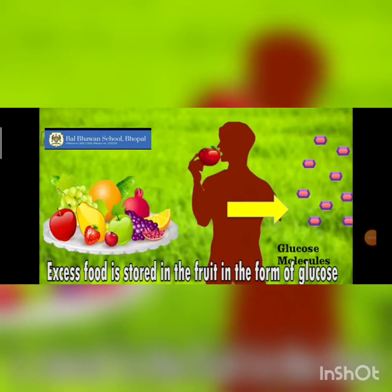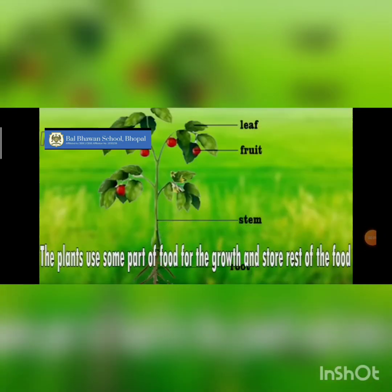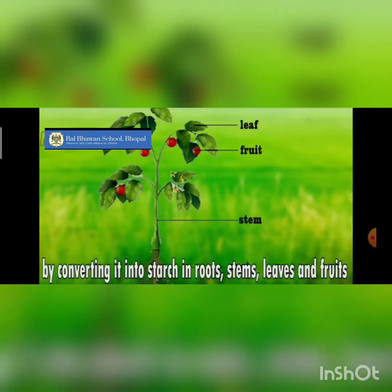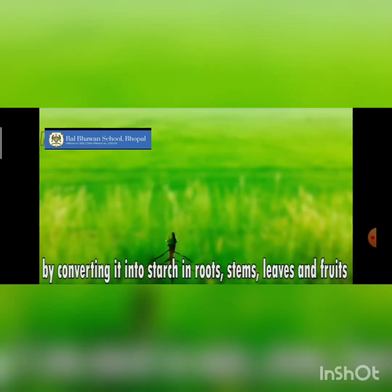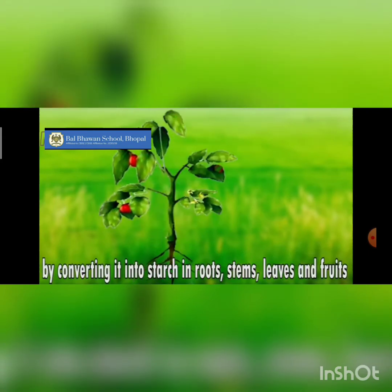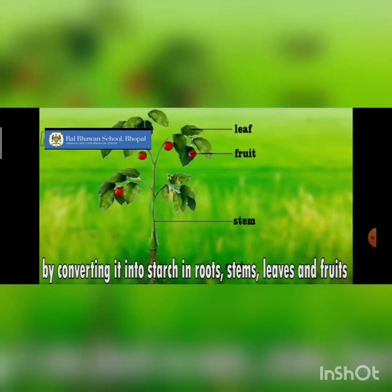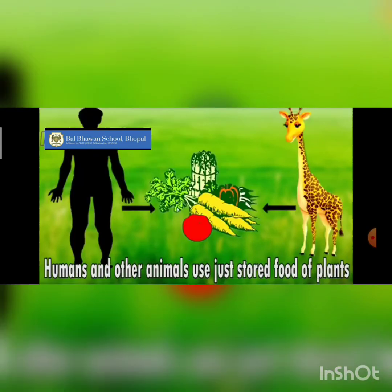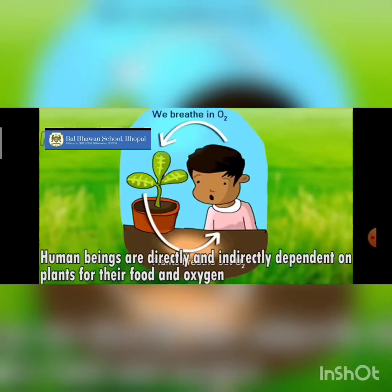Excess food is stored in the form of starch. The plants use some part of the food for growth and repair, and the extra part is stored by converting it into starch in different parts like roots, stem, and leaves. Humans and other animals use this stored food of plants. Human beings are directly or indirectly dependent on plants for their food and oxygen.